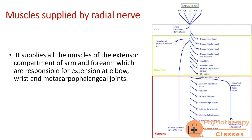Let us briefly consider the muscles supplied by the radial nerve, because these are the muscles that will be affected or paralyzed. The radial nerve supplies all the muscles of the extensor compartment of the arm and forearm. These muscles act as extensors at the elbow joint, wrist joint, and metacarpophalangeal joints, as well as at the interphalangeal joints.